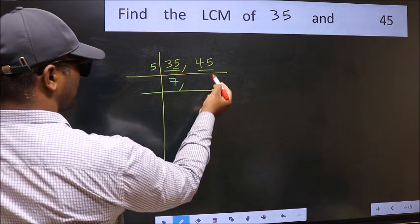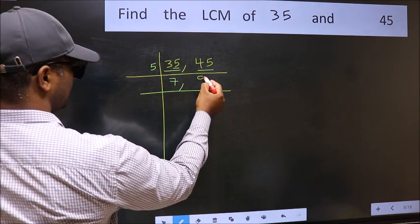The other number, 45. When do we get 45 in the 5 table? 5 times 9 is 45.